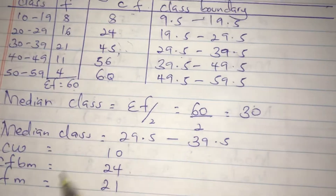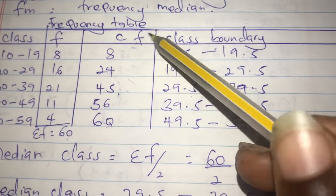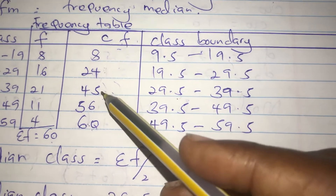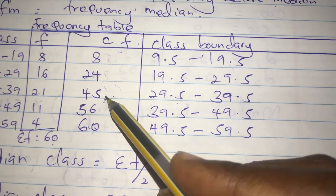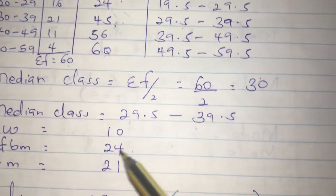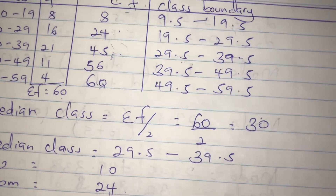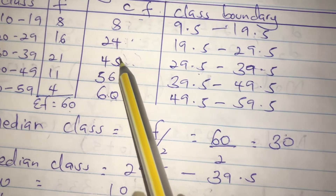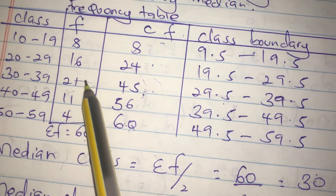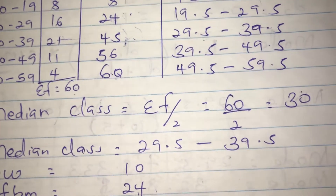The cumulative frequency before the median class: we look at the cumulative frequency column at the row just before our median class, which gives us 24. The frequency of the median class: we look at the frequency column for our median class row, which gives us 21.